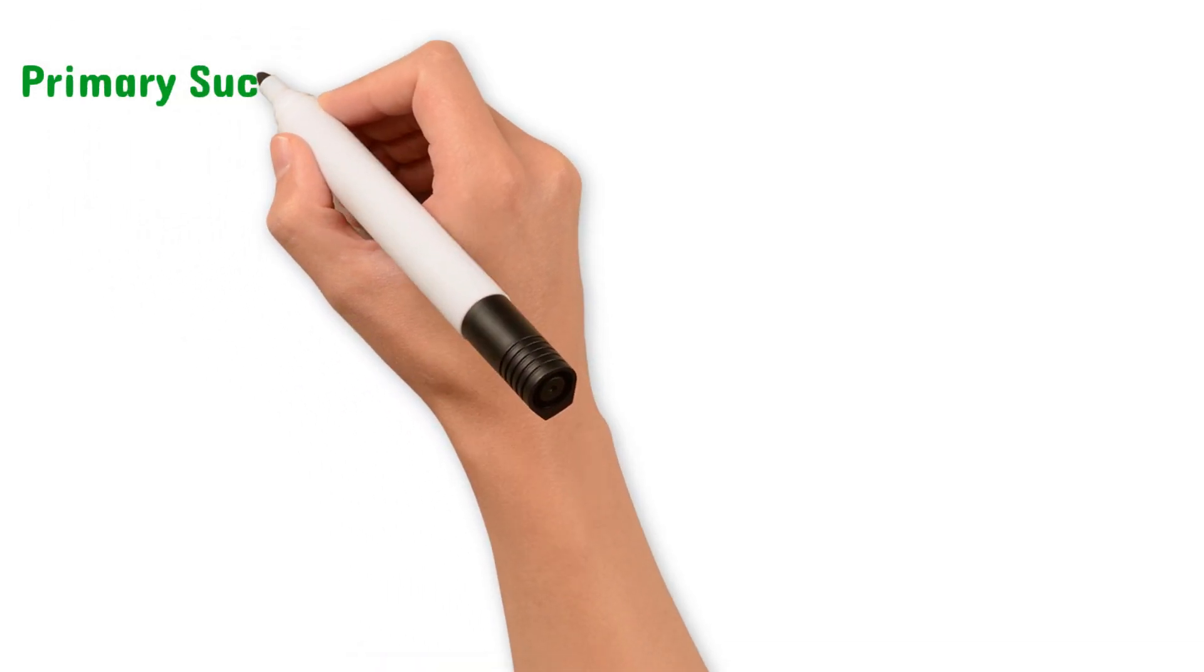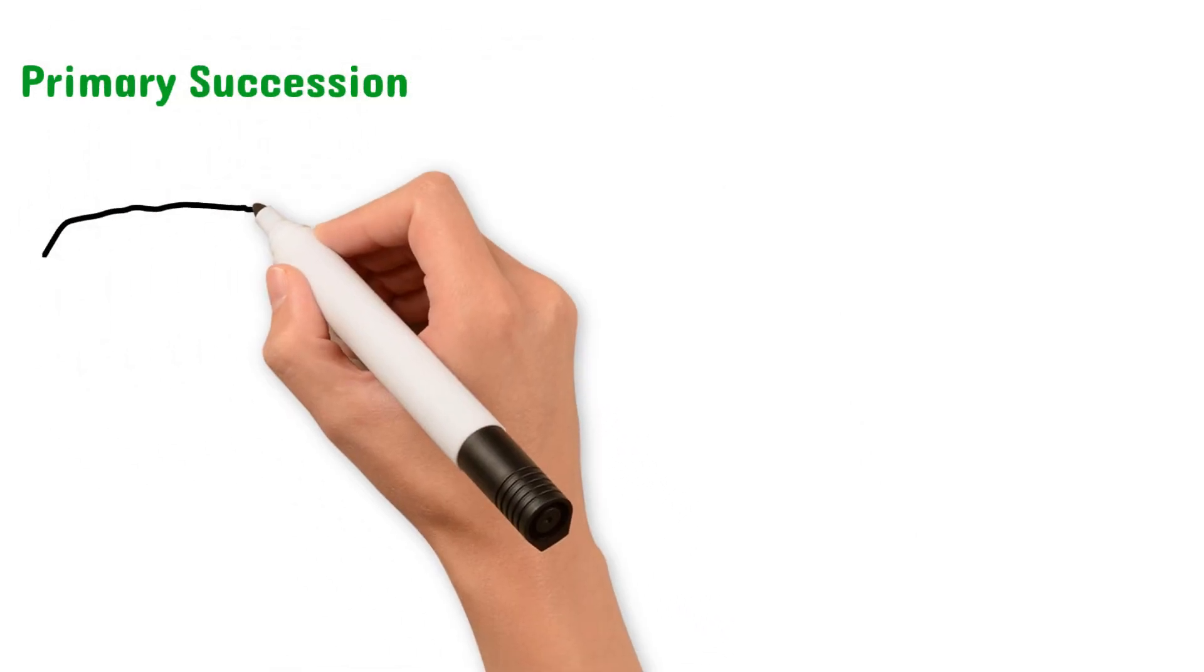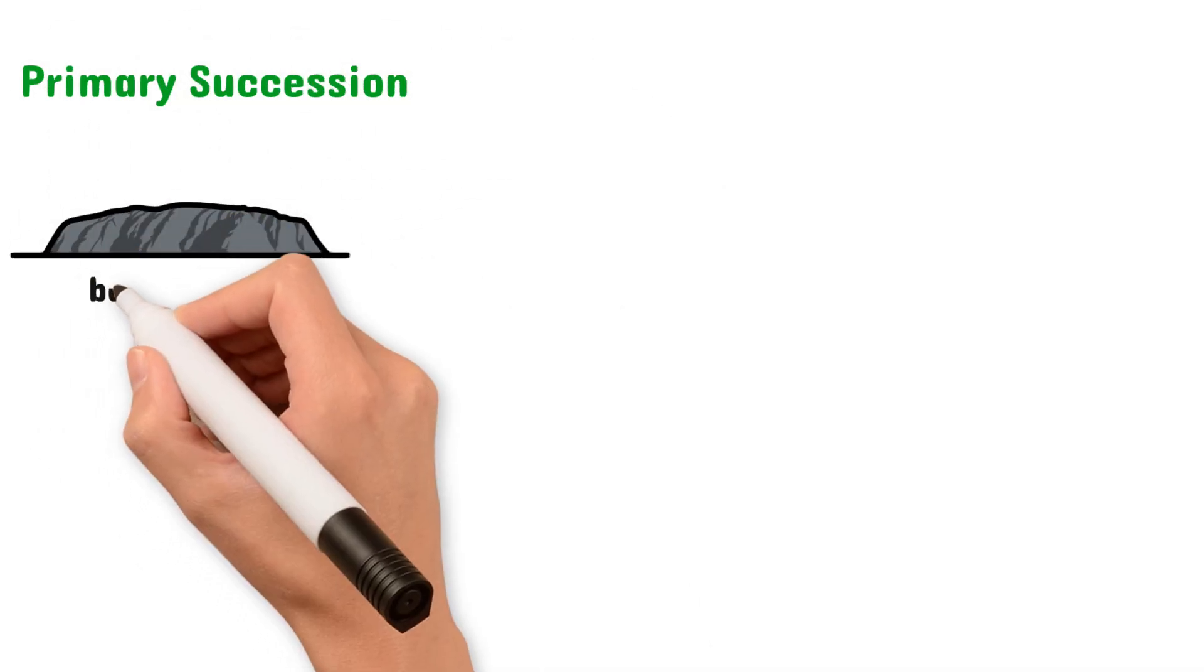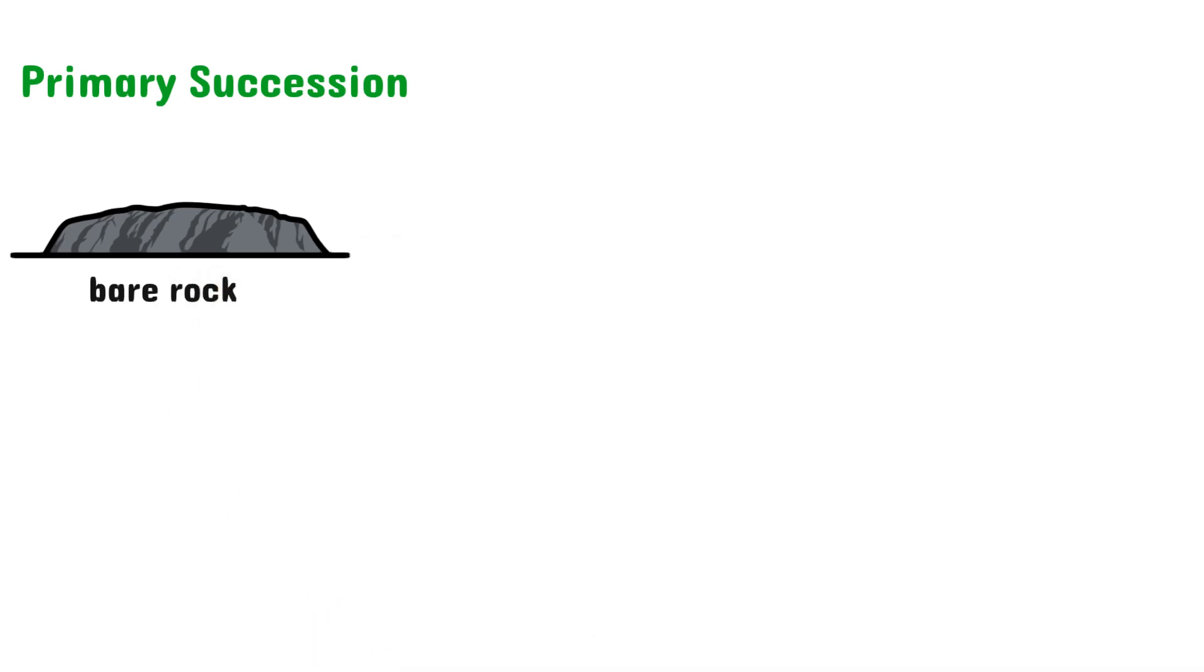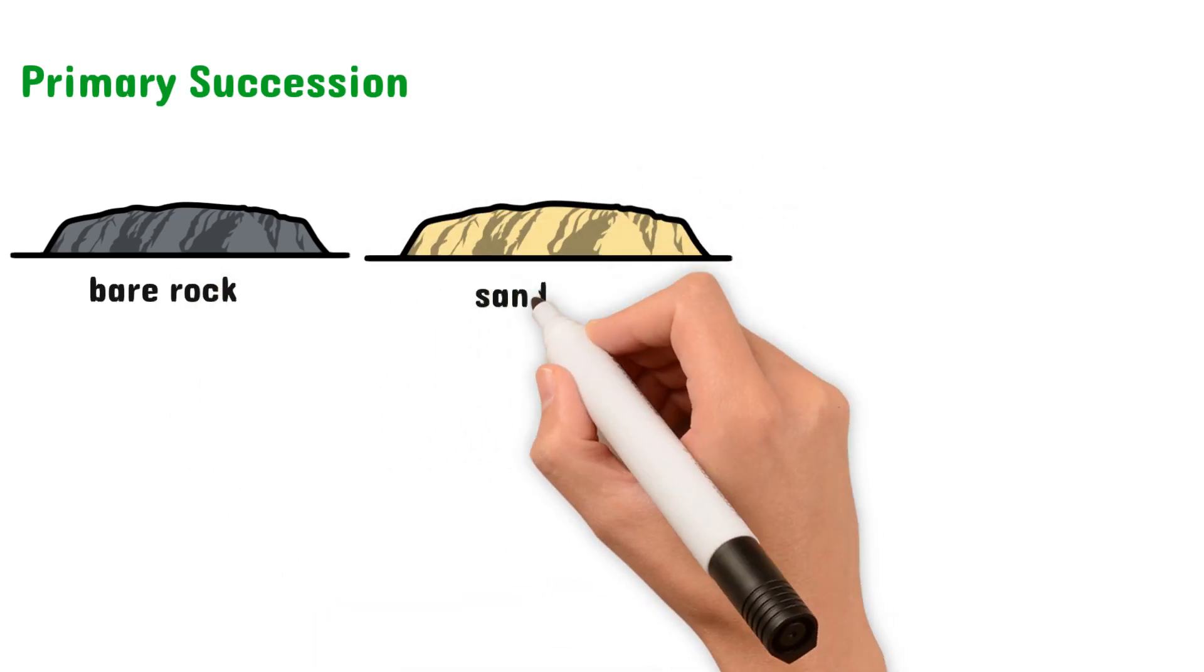We'll start by looking at primary succession. Primary succession involves an ecosystem that begins as an inorganic surface. So for example, a rock or a sand dune.